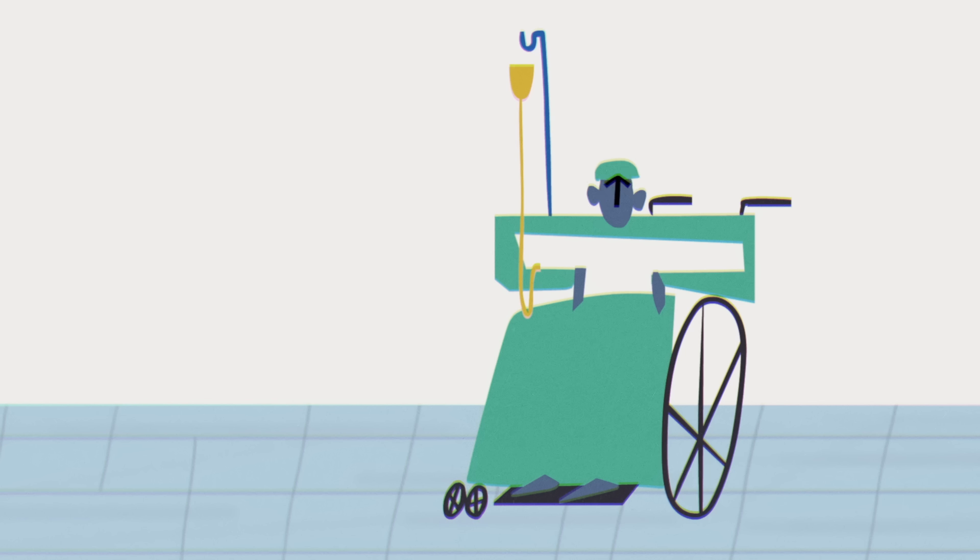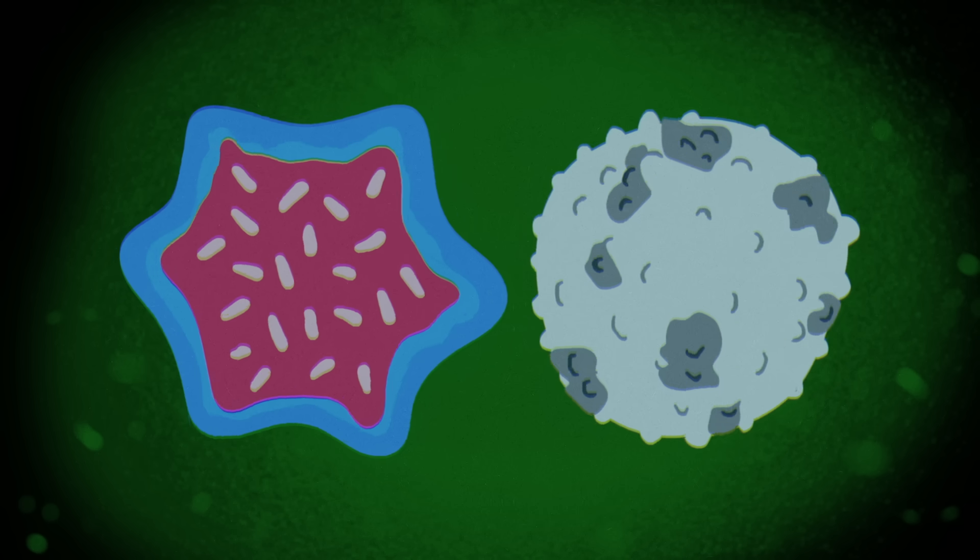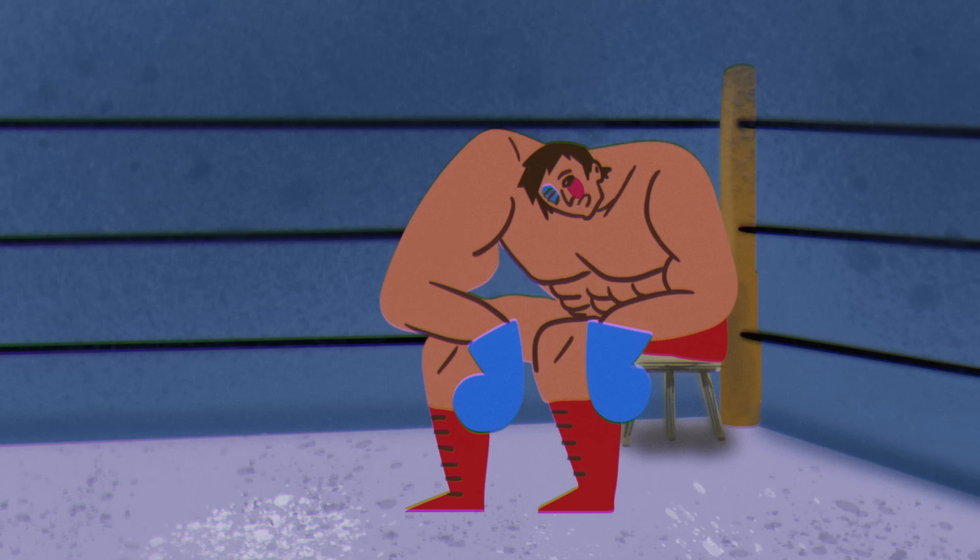Meanwhile, the recipient prepares for the transplant. High doses of chemotherapy or radiation kill the patient's existing marrow, destroying both malignant cells and blood stem cells. This also weakens the immune system, making it less likely to attack the transplanted cells.